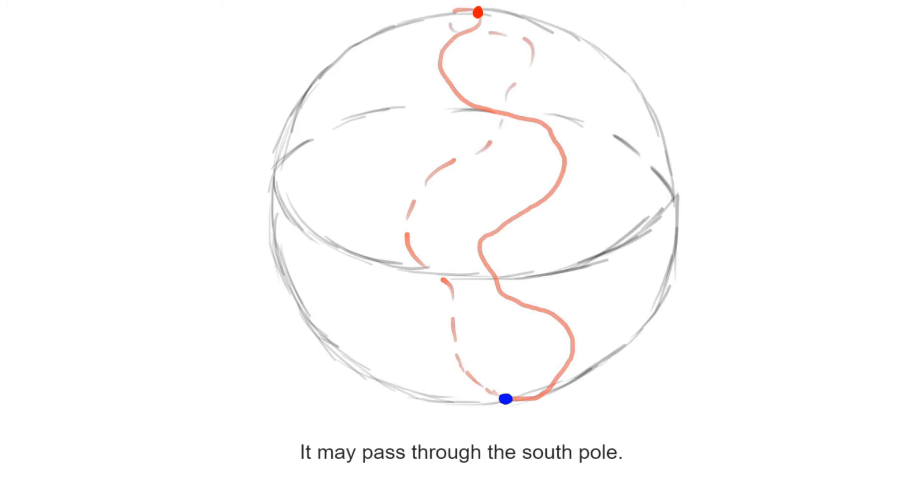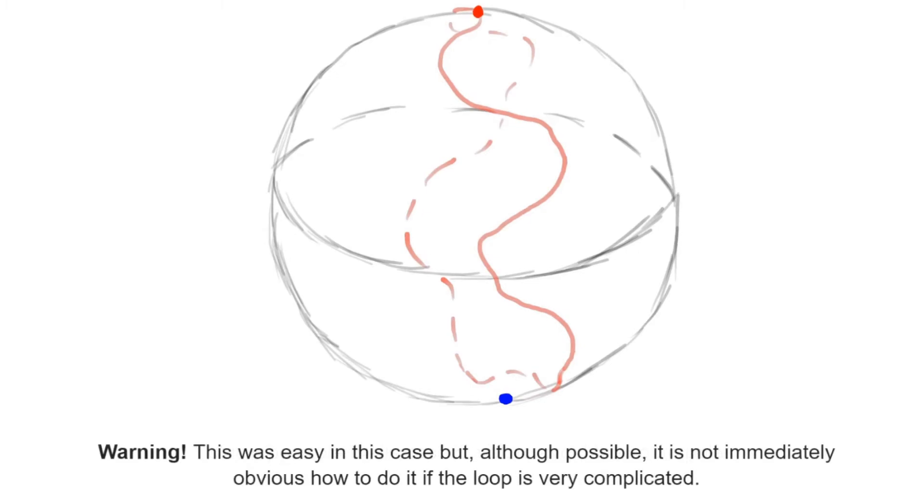The first step in doing this is to make a little displacement that makes it disjoint from the south pole. In this example, this looked very easy, but you should be careful. You've probably seen before examples of extremely badly behaved paths. For instance, the Peano curve is a map from the unit interval that completely covers the unit square.